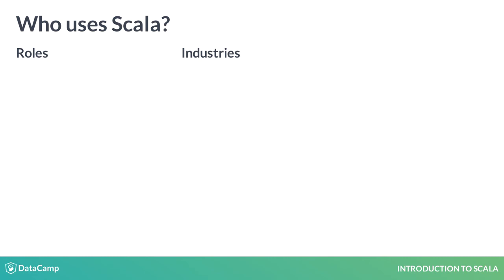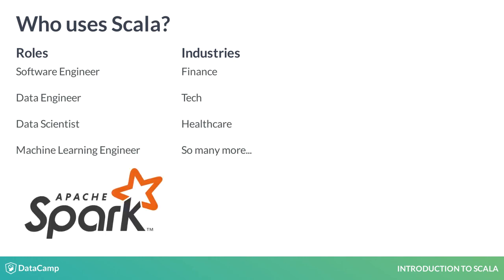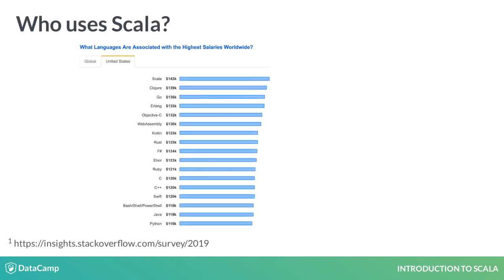If you search Scala on job boards, the most common job titles you'll see are variants of software engineer, including software developer, backend engineer, and others, and then data engineer. You'll also see data scientist and machine learning engineer more frequently as companies in all industries realize the challenges of analyzing big data. These companies are adopting Scala alongside data processing tools like Apache Spark, which is written in Scala. On DataCamp, we are focusing on the latter three roles in all industries. These high-paying roles, combined with exploding demand and a relative scarcity of talent, means those who use Scala get paid well.